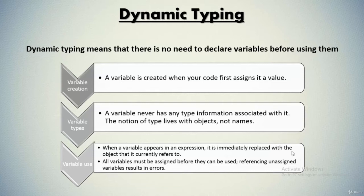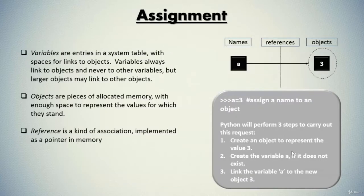Despite the fact that you're allowed not to declare a variable before using it, you need to assign a variable before using it, because unassigned values create errors. Now we have variable assignment. Variables are entries in a system table with spaces for links to objects. Variables always link to objects and never to other variables, but larger objects may link to other objects.